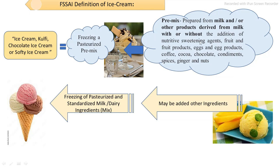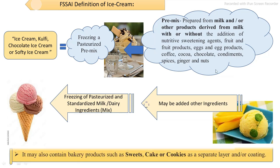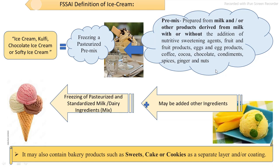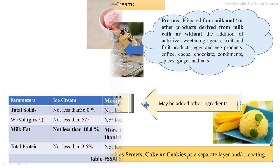The main additional ingredient categories include fruits and fruit-related products, eggs and egg-related products, coffee, cocoa, chocolates, spices, and nuts. These ingredients may be added along with additives, and may also be combined with sweets, cake, and cookies.